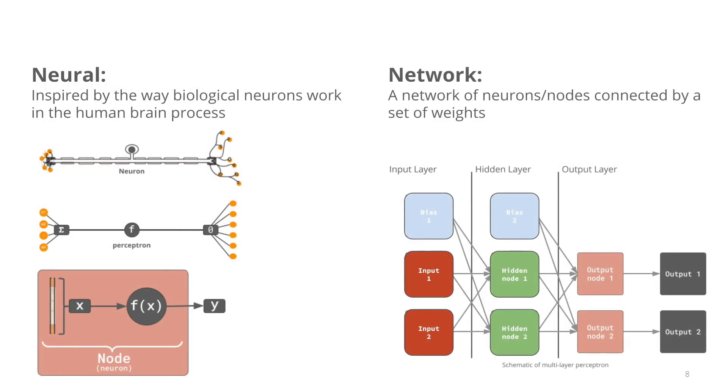A schematic representation of a dense neural network can be found to the right here in the slide. It is a one-layer neural network, also called a shallow neural network, and it consists of three parts: we have an input layer, a hidden layer, and an output layer.